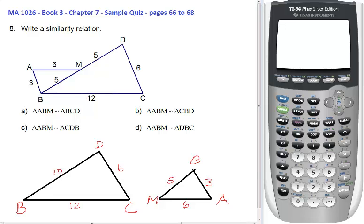Now this one is the same as number seven, same diagram as number seven with a different question. It's asking us to write a similarity relation. Now we showed in multiple choice number seven that these were similar by side, side, side similarity.